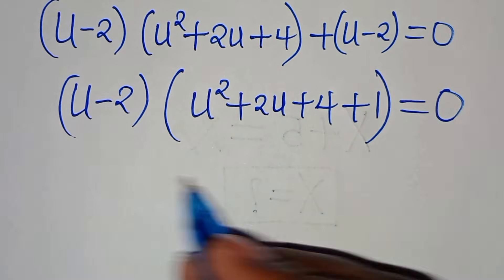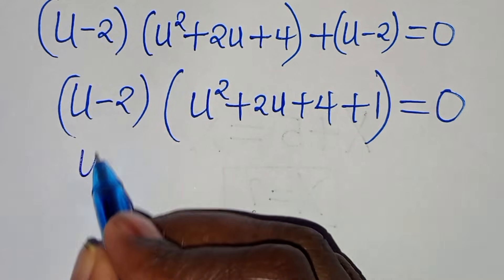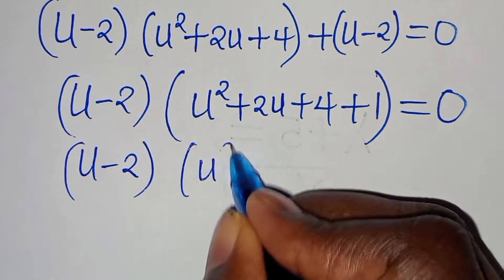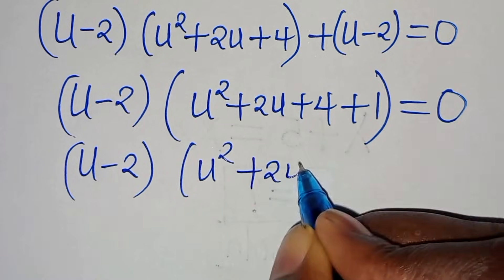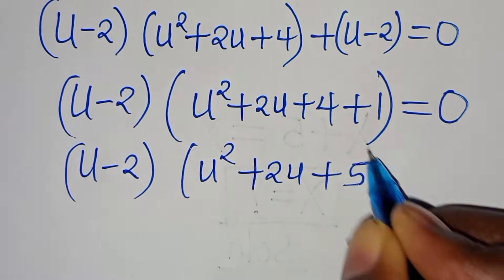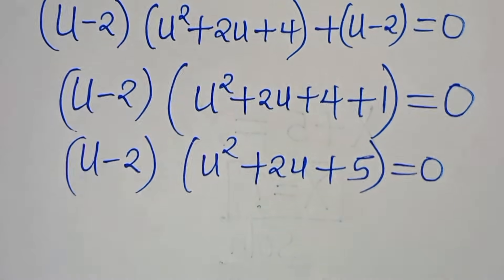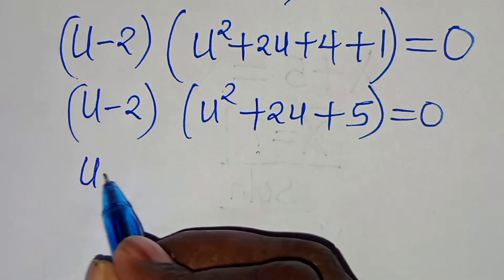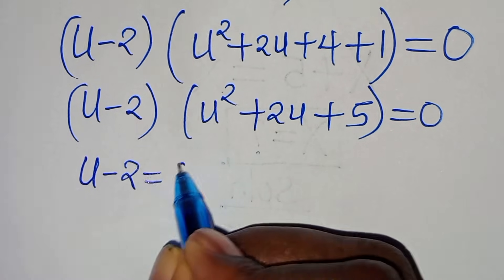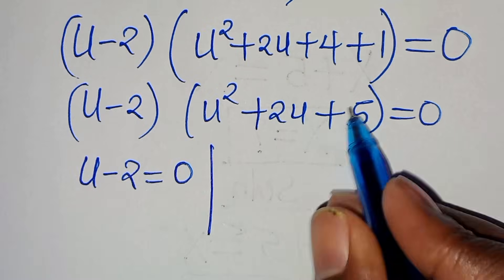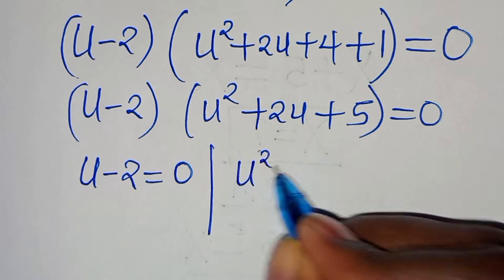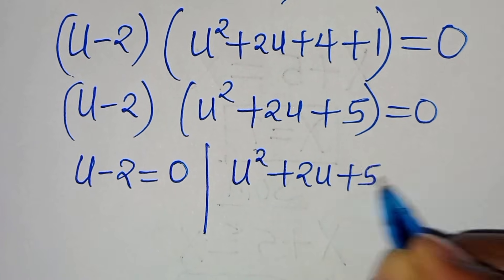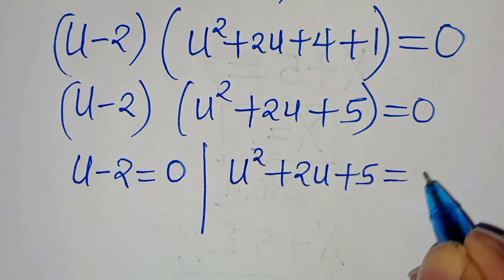So we have two parts: u minus 2, and u squared plus 2u plus 4 plus 1, which is 5. This gives us u minus 2 equals 0 from the first part, and u squared plus 2u plus 5 equals 0 from the second part.